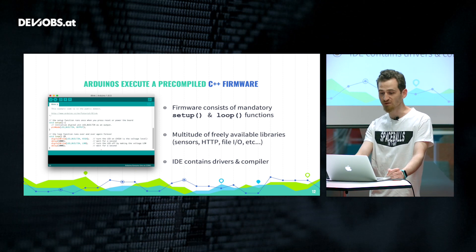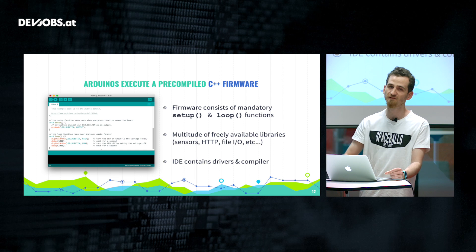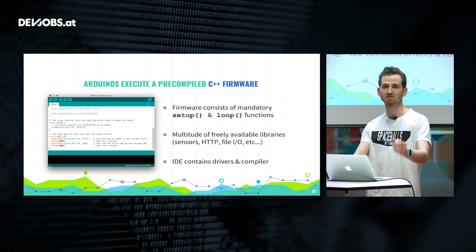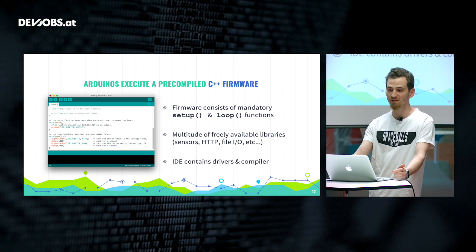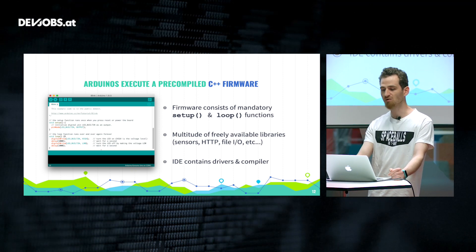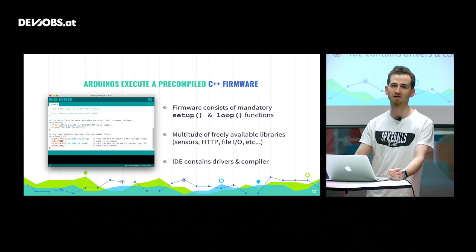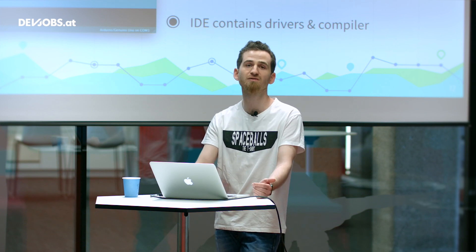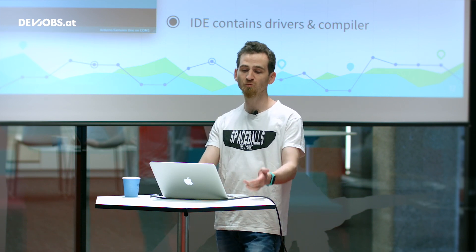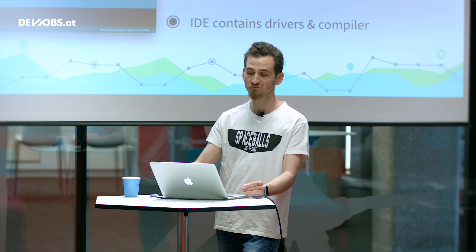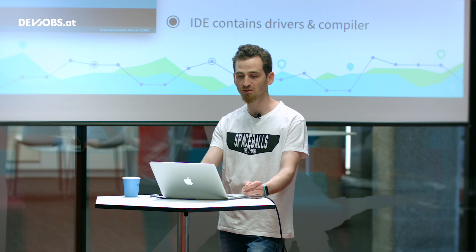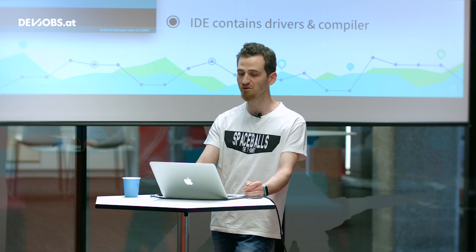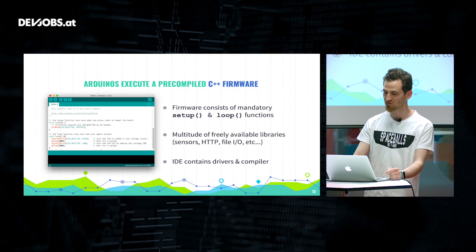The firmware mainly consists of a mandatory setup and loop function. When the Arduino starts up, it calls the setup function first — setting up the Wi-Fi connection, IP address configuration, and initiating the NTP client — then calls the loop function over and over until it loses power. The IDE itself is basically a one-stop shop: it contains drivers and the compiler. You open a new project, load or write code, click a button to validate and compile, and if the Arduino is connected via USB it gets flashed immediately. Pretty smooth.